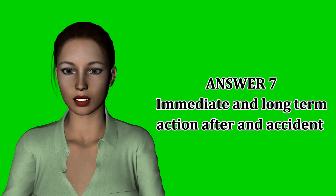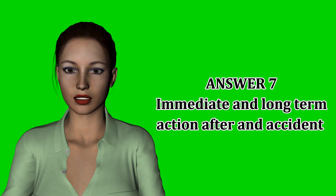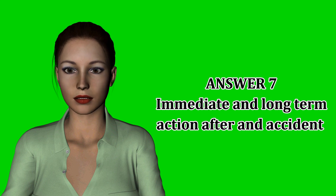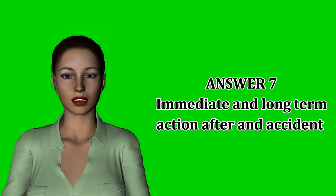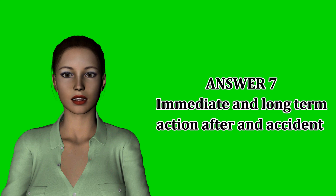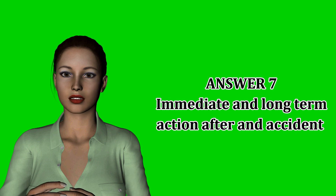Question 7: Outline the immediate and longer-term actions that should be taken following a serious injury accident at work. Immediate action: call for help, first aid and emergency services, take the victim away from the danger area if it is safe to do so, remove hazards with imminent danger. Longer-term action: reporting the accident under legal requirements, undertake an investigation, and on the basis of investigation findings, work procedures are to be reviewed.